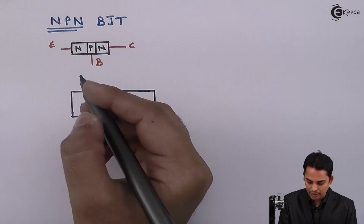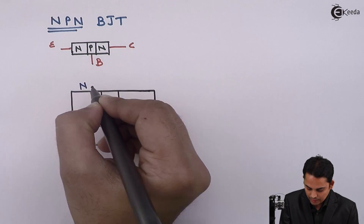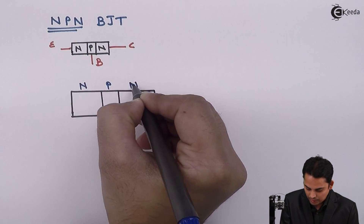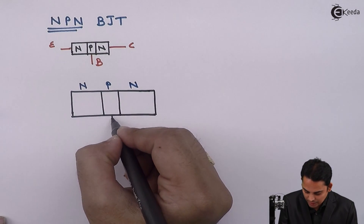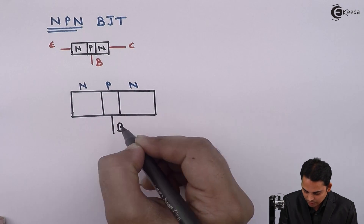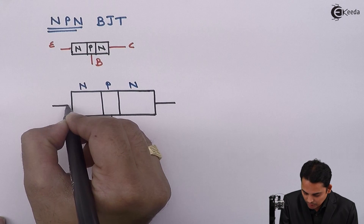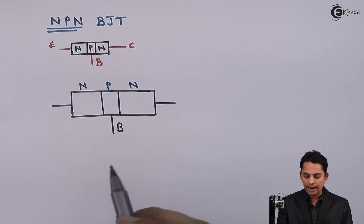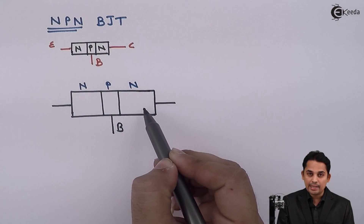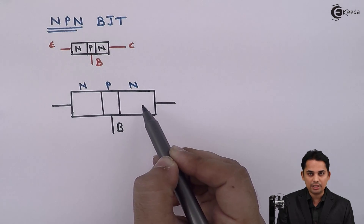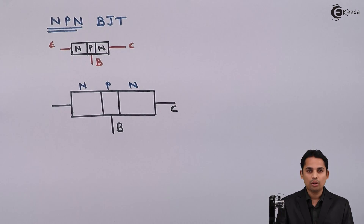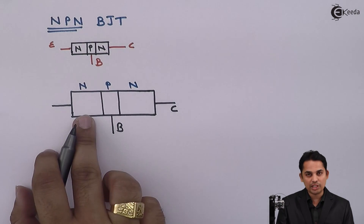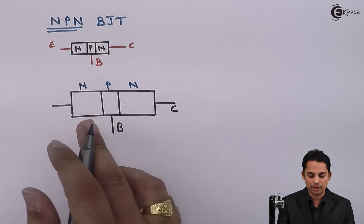This is the NPN transistor, where this P terminal is nothing but the base terminal. As the area given to this N semiconductor is the highest, it is called the collector, whereas the area given to the other N semiconductor is medium, hence it is called the emitter.